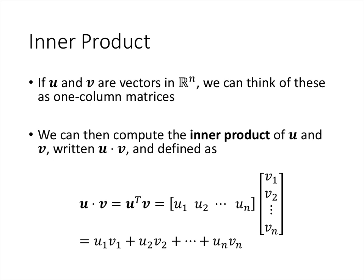Specifically, when we think of vectors in R^n, we can think of these as one-column matrices, and so that allows us to compute what we call the inner product of two vectors, which is simply the transpose of the first vector multiplied by the second vector using the regular matrix multiplication definition. Since we only have one row and one column, all we're really doing is multiplying each entry of u by the corresponding entry in v and adding up the results: u1*v1 + u2*v2 + ... + un*vn. This one-by-one matrix is simply a scalar.